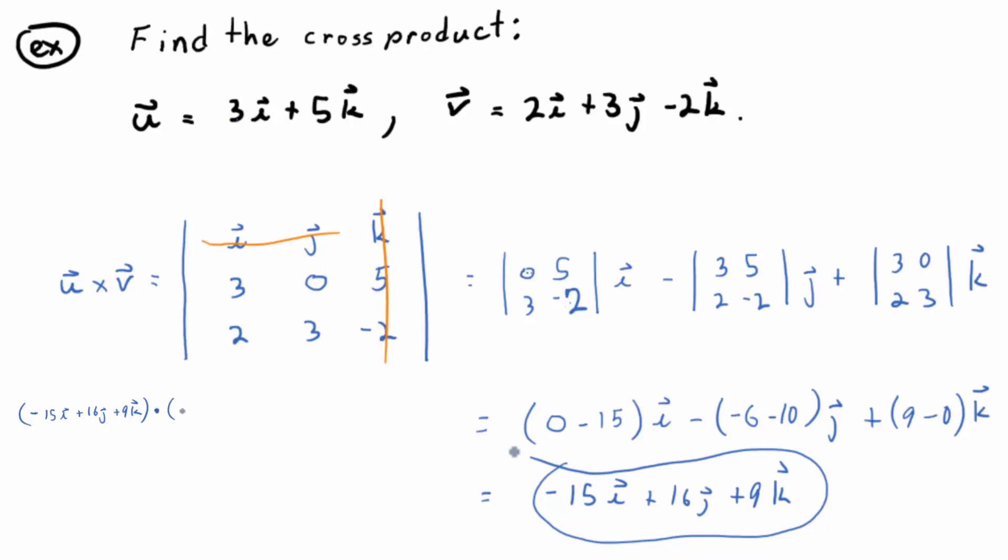If we take this vector, negative 15i plus 16j plus 9k, don't be afraid of ijk notation, dot it with, let's say V. It's true for both of them, but I'm just going to prove one. We should get zero if they're orthogonal, which means perpendicular. Hopefully we get zero. And by the way, that's kind of a way to check your work too. So, what do we get here if we multiply corresponding components? Negative 30 plus 48? Plus 48, then hopefully minus 18, yep. I think that's zero.